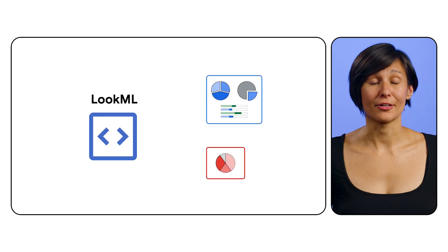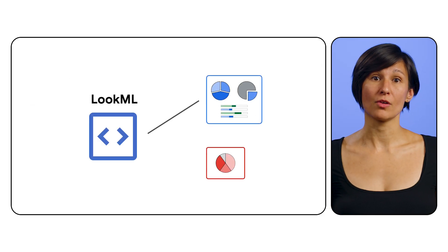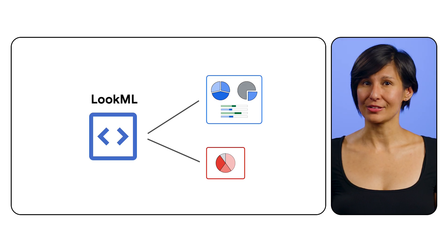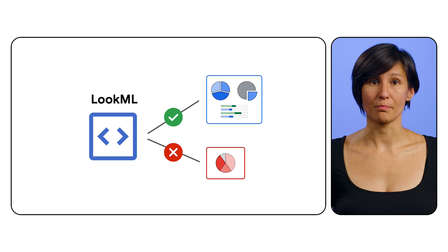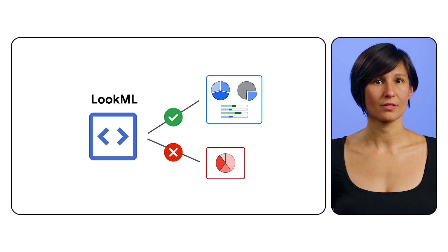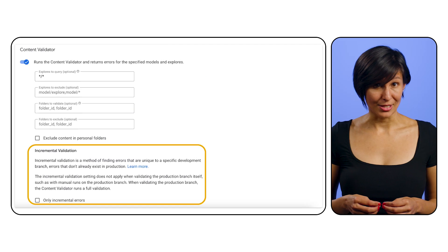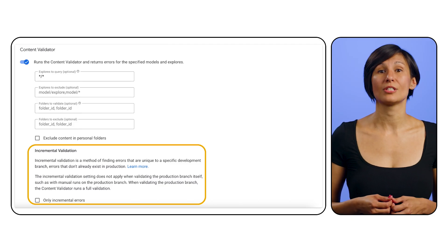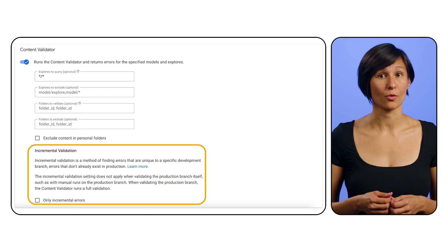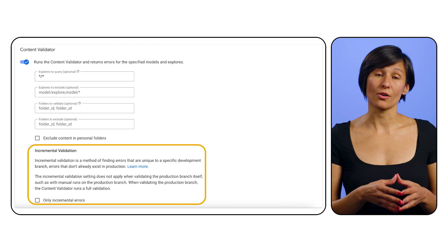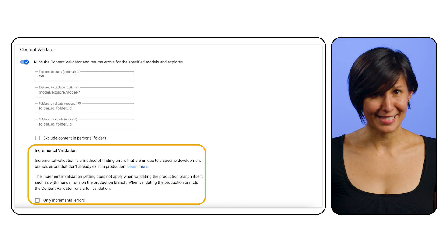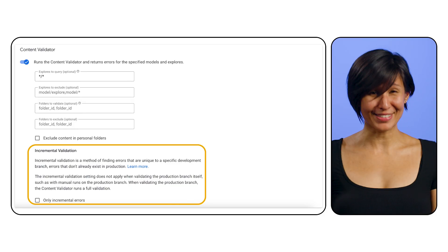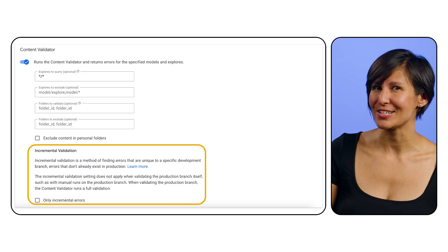The content validator checks that dashboards and looks do not break based on your changes. It has been integrated into the Looker CI, and you can configure it to exclude or include certain models, explorers, or folders. With incremental validation, the SQL and content validators can be configured to check just the development branch you are working on, so you can fix your own errors without dealing with errors from the main branch. As an example — my change is going to break a dashboard. Thank goodness Looker CI caught it — I'd better go address it.